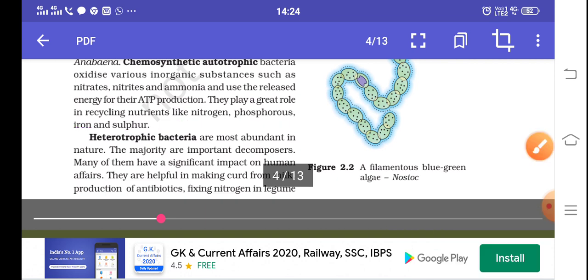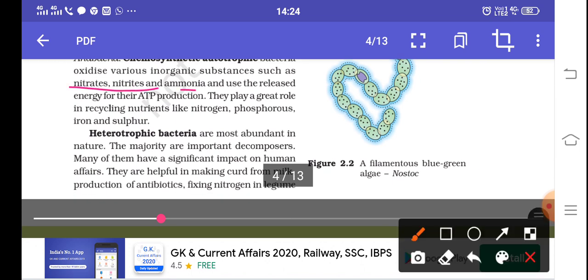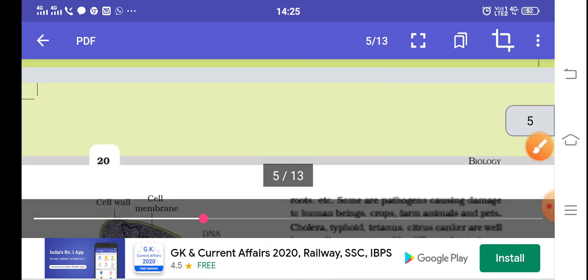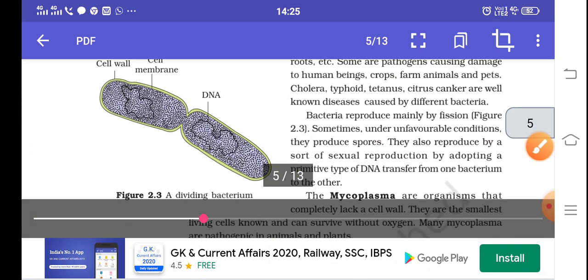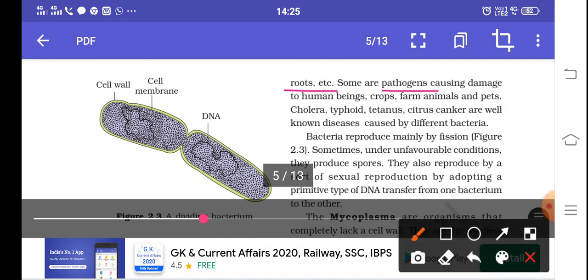First, they fix atmospheric nitrogen into nitrates. And then they also produce ATP. Some of these bacteria are heterotrophic in nature, meaning they are decomposers. They are helpful in curd making and fixing nitrogen. We know that atmospheric nitrogen is fixed in leguminous plants. In the roots there are some bacteria that are pathogens, harmful to crops and animals.